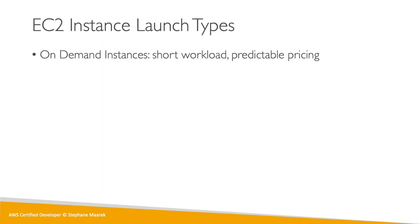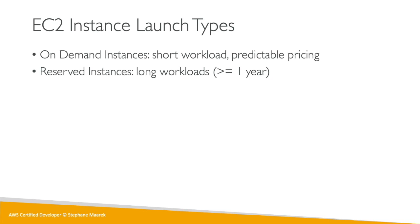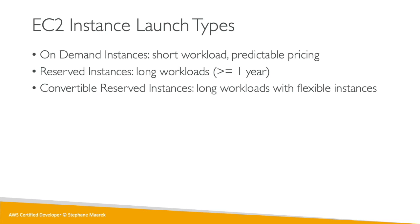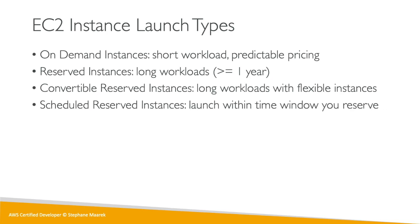The first one is on-demand instances — it's what we've been doing so far: short workloads, predictable pricing. Then you can reserve an instance — if you know you're going to run a database for a long time, maybe over a year, you're better off purchasing reserved instances. You can also buy convertible reserved instances when you know you'll be running something long-term but aren't sure if you'll need, say, a c4.large or a c4.2xlarge. Scheduled reserved instances are for when something happens every week but only during one hour or one day.